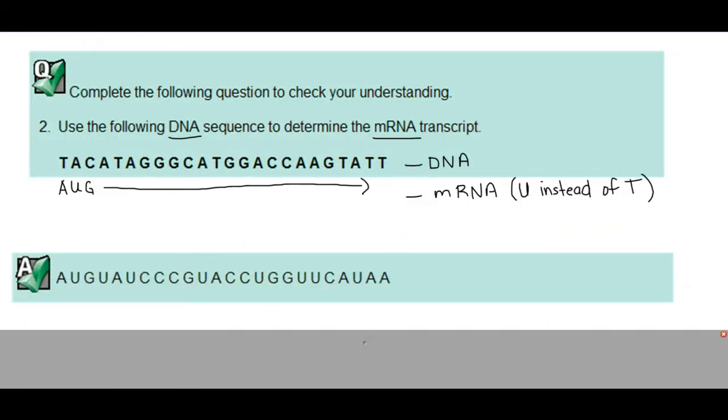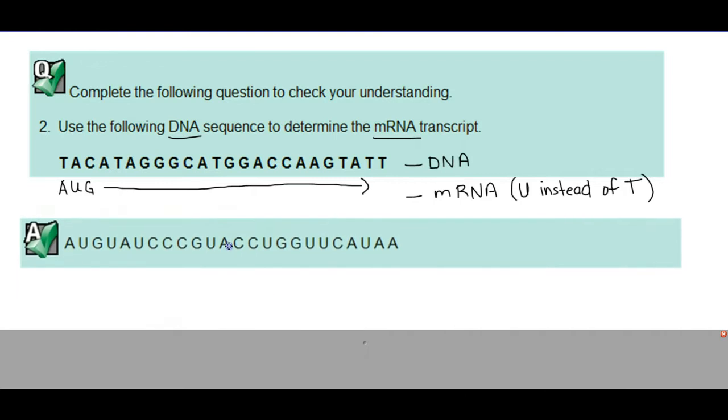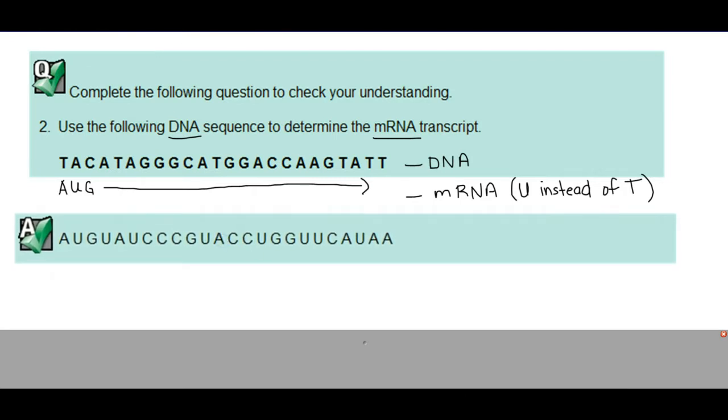Here's our answer. What we should have ended up with - and why I asked you to put the slashes, just because it helps to separate things - we have AUG, UAU, CCC, GUA, and so on. All I'm saying is separate them into sets of three because that's what represents a codon in the end anyway. So this is your complete answer for your mRNA transcript. This is what you should have ended up with as the complementary mRNA strand to the original DNA.